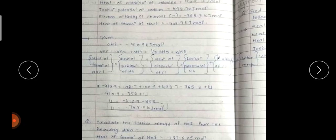U will be minus 768.9 kJ per mole. U is equal to 768.9 kJ per mole. You got this point.